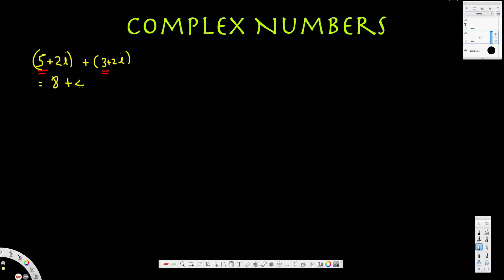Now let's try this one. Let's say we have 7 plus 3i, plus 6 plus 5i. For the addition: 7 plus 6 is 13, and 3i plus 5i gives us 8i. So the answer is 13 plus 8i.